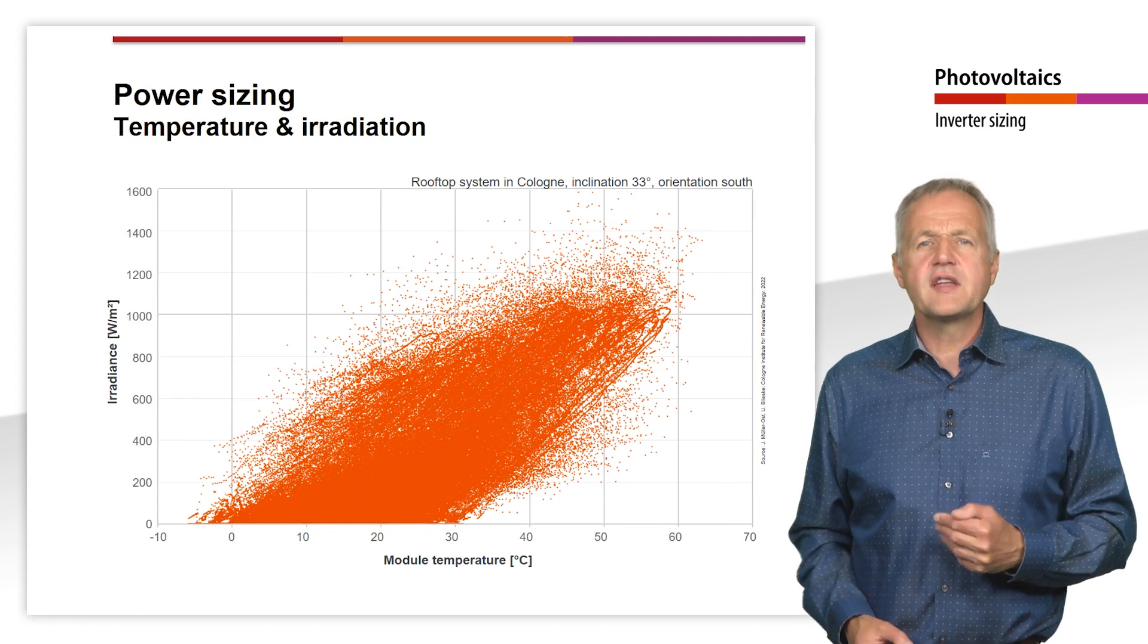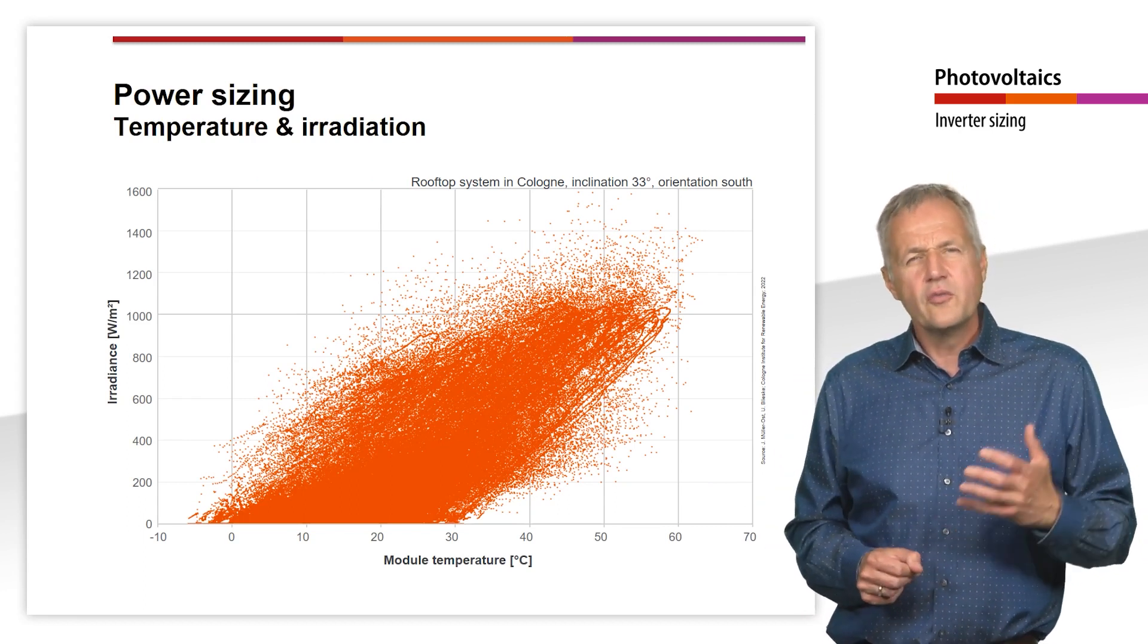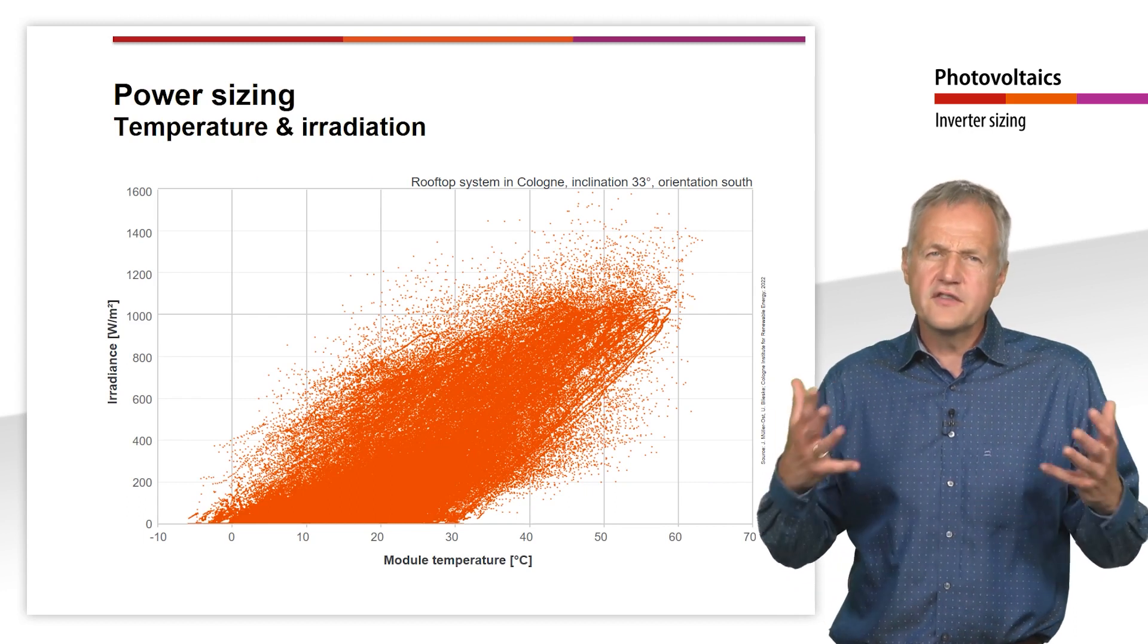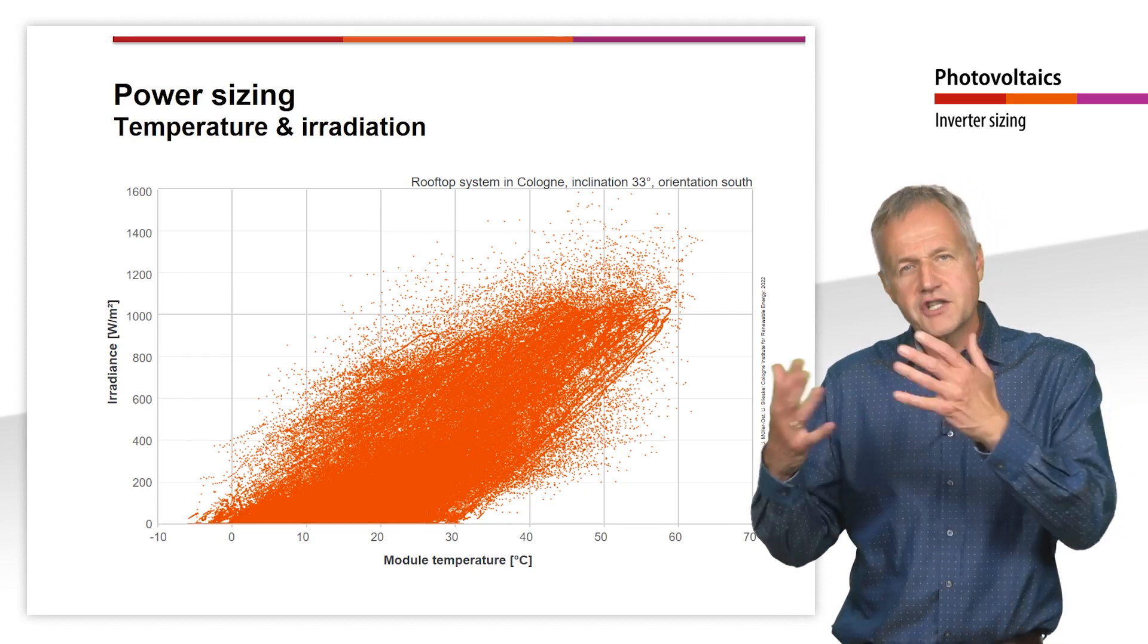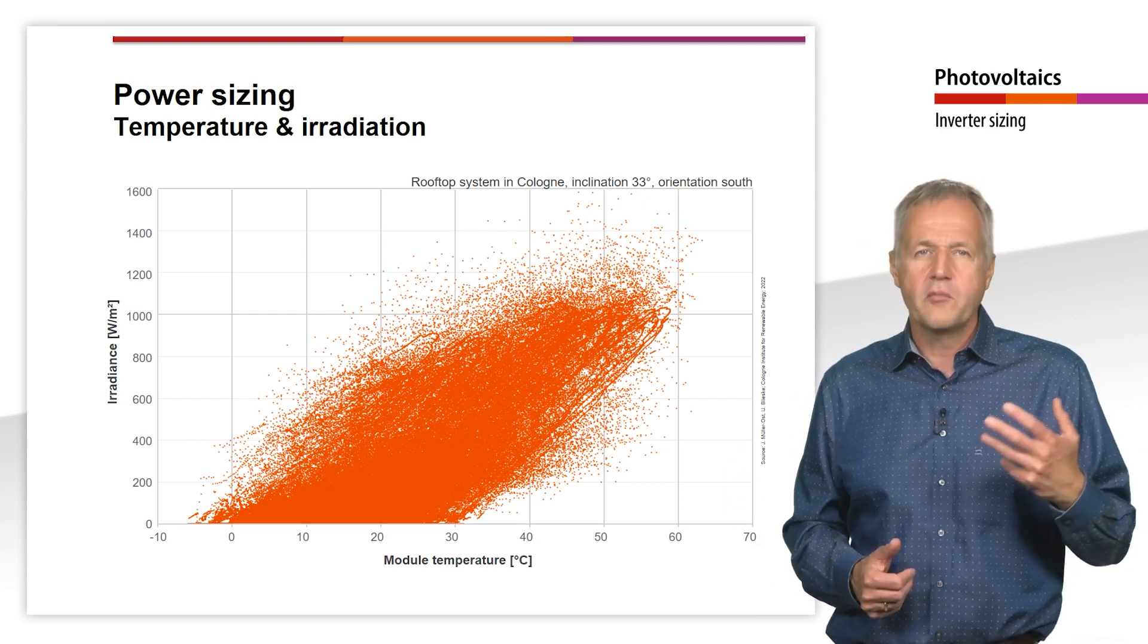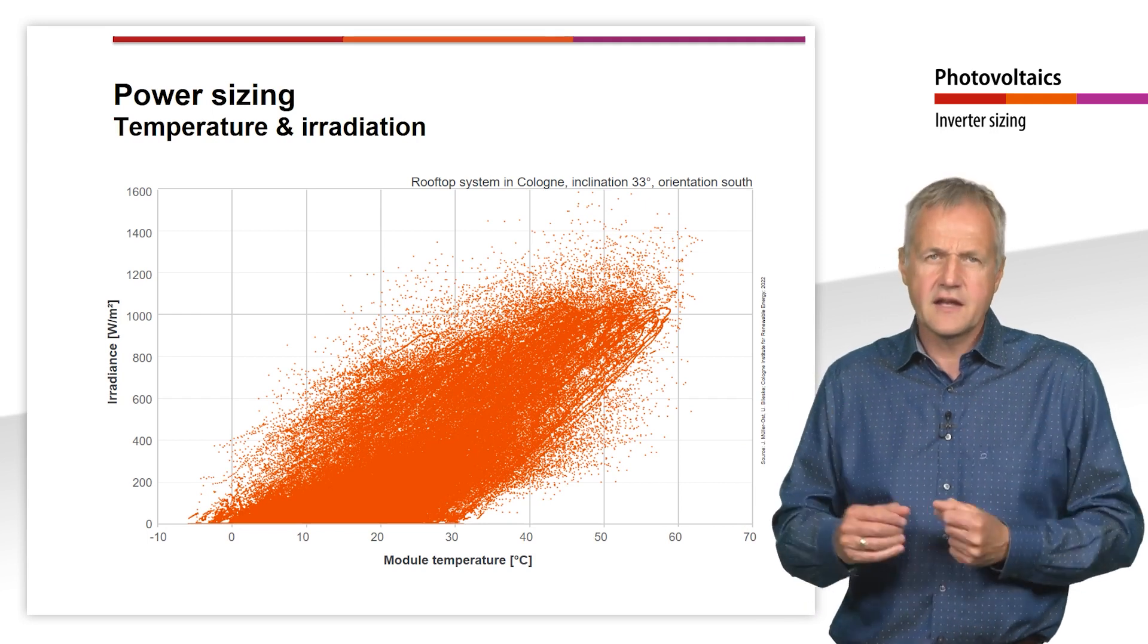Usually the first step is to determine the desired power of the inverter. You might ask yourself what there is to determine? Couldn't you simply choose the inverter power as large as the power of the solar generator? Basically, you won't do anything wrong if you do exactly that.